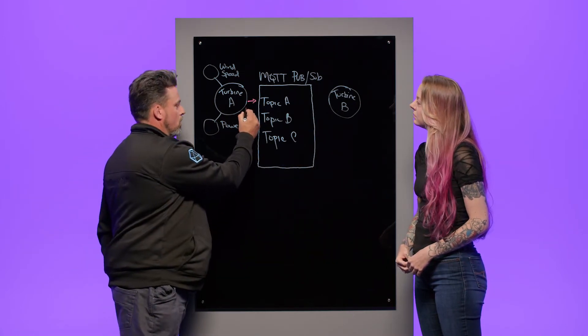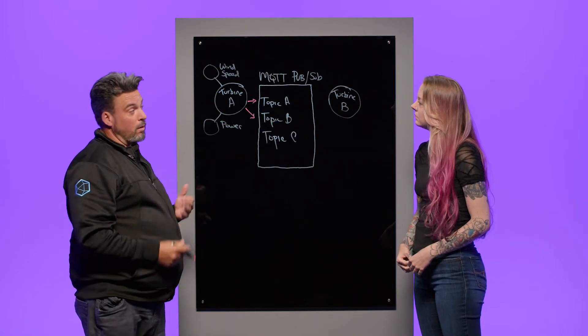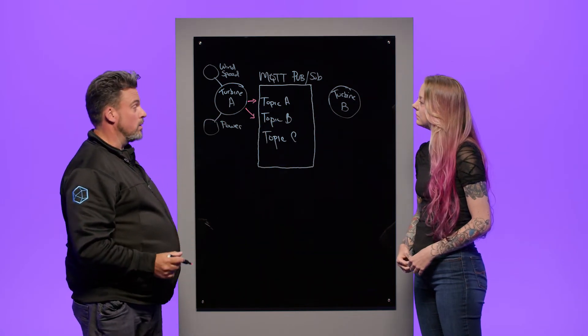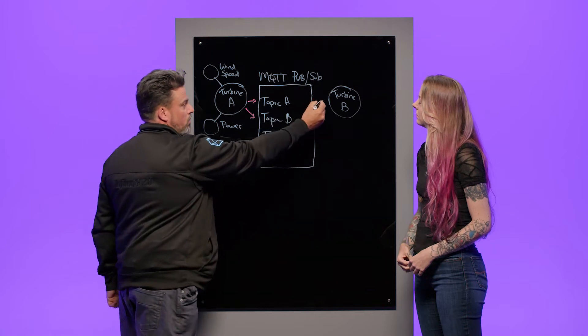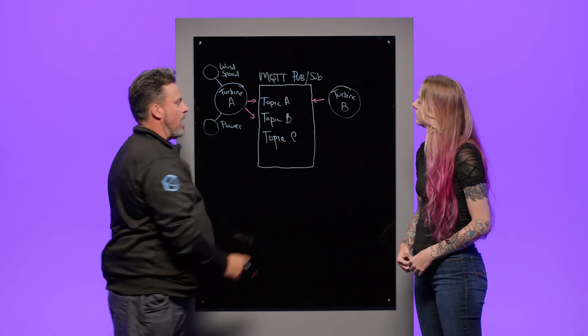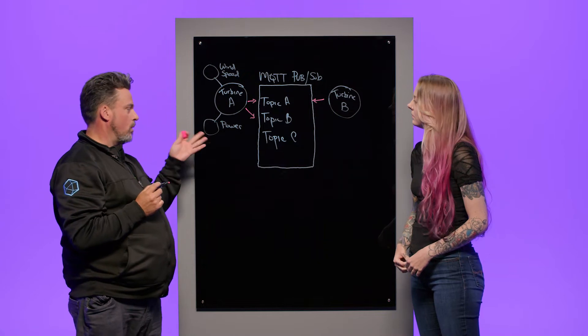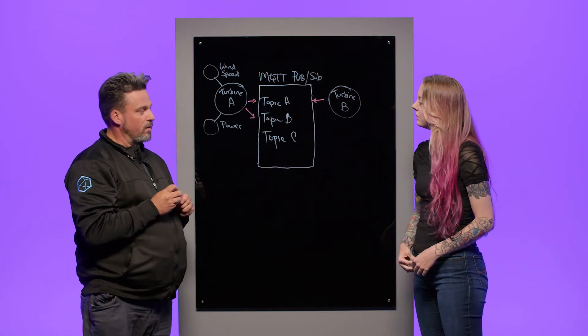And power could get published to topic B. Now that broker holds that data temporarily so that other machines, like another turbine, could actually reach in and grab that data on what the wind speed was or what that wind speed was generating in terms of power on the other machine.